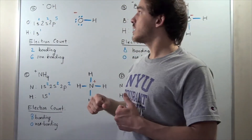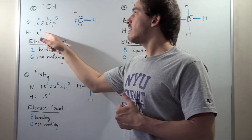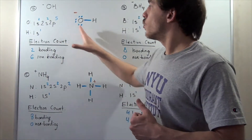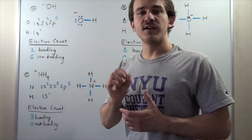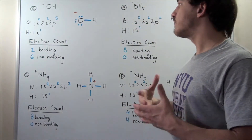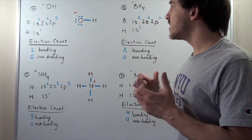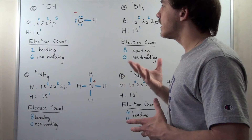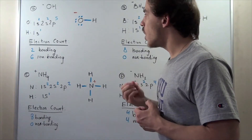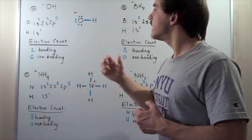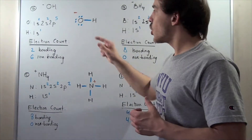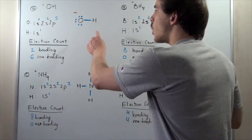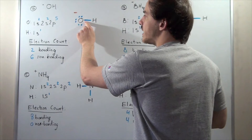We have 7 valence electrons for O and one valence electron from H, giving us eight valence electrons total to place around our atoms. Let's begin by placing oxygen and H adjacent to one another. We draw a sigma or covalent bond between oxygen and H, which means one electron is donated by H and one electron is donated by O.